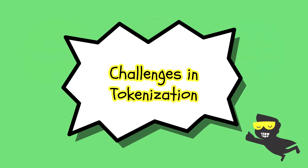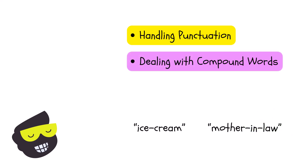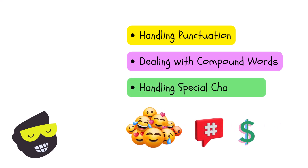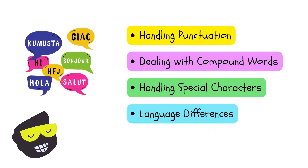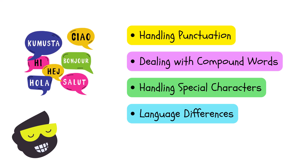There are some challenges when it comes to tokenization. Deciding whether to remove or keep punctuation can impact the analysis — sometimes a dot or a comma does affect the meaning. Dealing with compound words like 'ice cream' or 'mother-in-law' requires special handling. Handling special characters, emojis, hashtags, and other characters in different languages also needs to be addressed appropriately. And of course, language differences matter — different languages have different tokenization rules, especially languages without clear word boundaries like Chinese or Japanese. In German, for example, there are many compound words that need to be broken down differently.